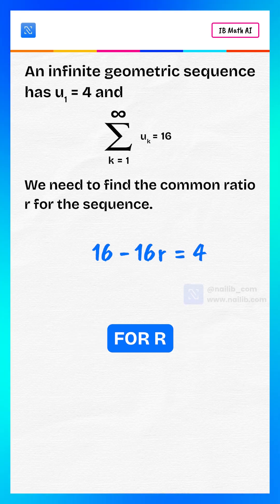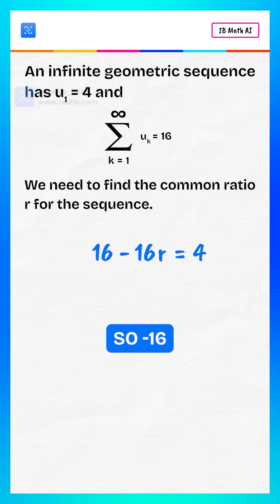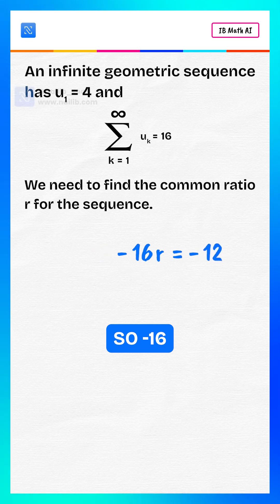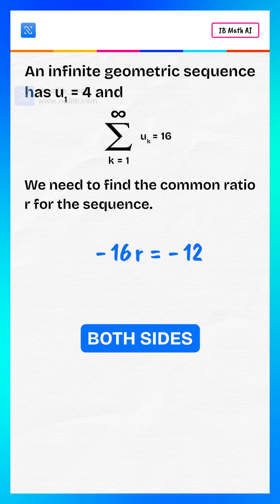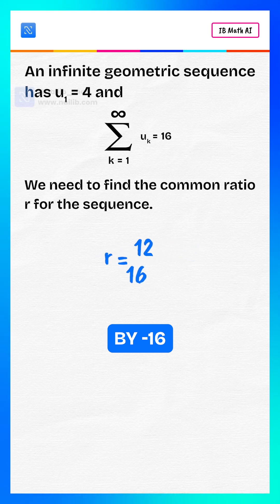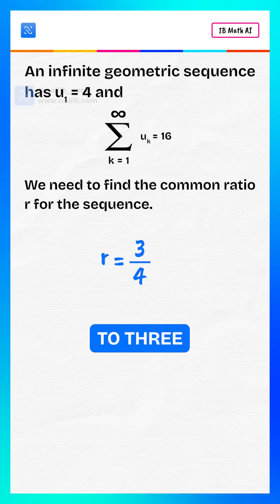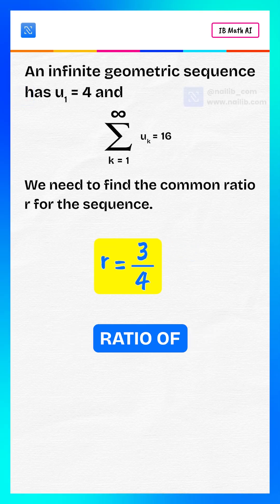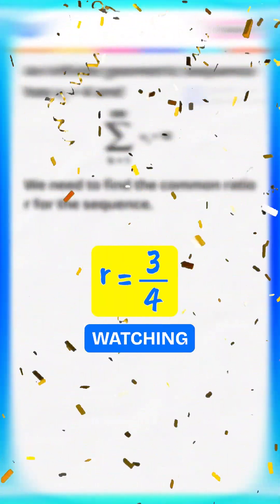Now we solve for r. Subtract 16 from both sides, so minus 16r equals minus 12. Now divide both sides by minus 16. This becomes r equals 3 divided by 4. So the common ratio of the sequence is 3/4.